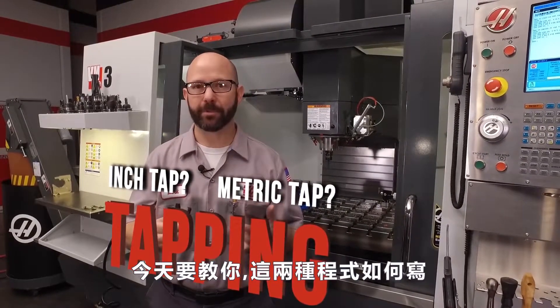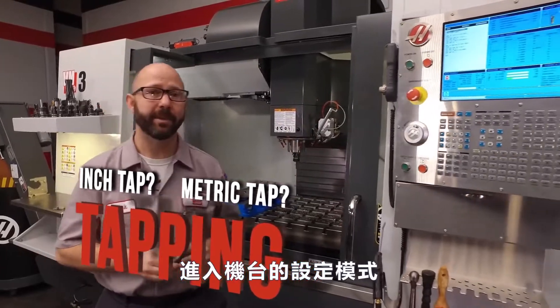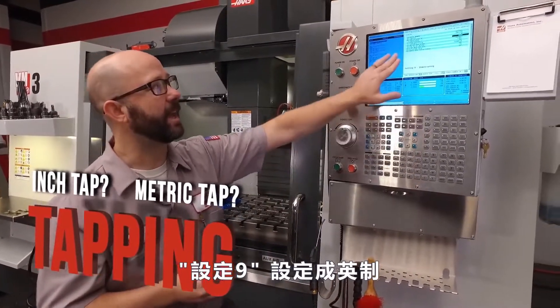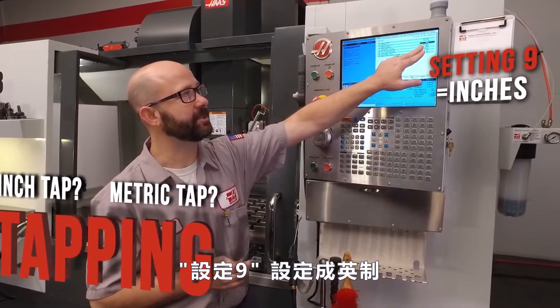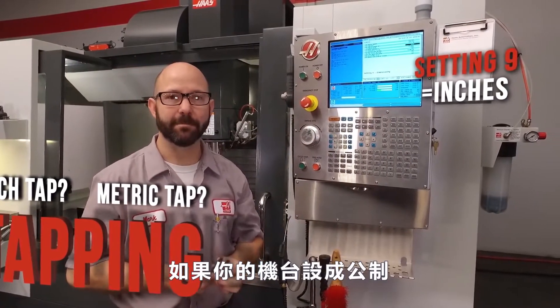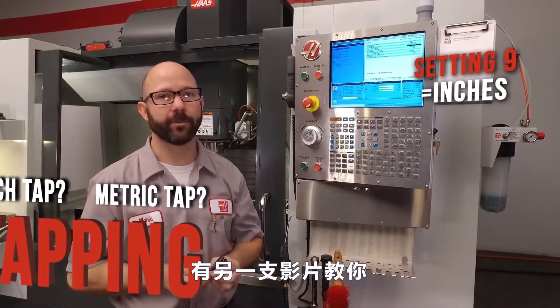Today we're going to show you how to do both on a machine that's set up in inch mode, with setting 9 dimensioning set to inch. If your machine is set to millimeters, we've got a different video for you.